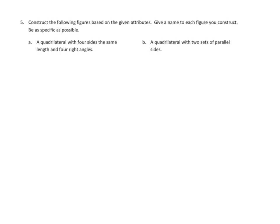Let's take a look at number five. Number five asks us to construct figures based on the given attributes. Give a name to each figure you construct, being as specific as possible. I'm going to look at 5B, where I want to create a quadrilateral with two sets of parallel sides. I've always liked shapes that are sort of like this. Let me tidy those up a little bit.